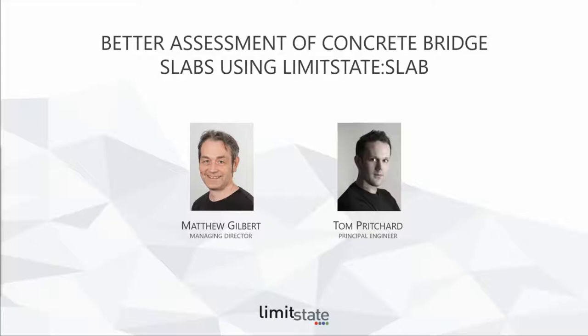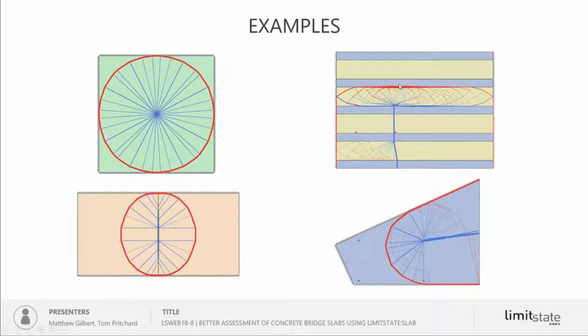Thanks very much, Tom. The first slide shows a series of examples. The pictures on the left-hand side are pictures of yield line patterns of the sort you might see in textbooks — a point loaded slab and a slab subject to a line load. On the right, we see completely different types of mechanisms of the sort we might find when we analyze more complex problems.